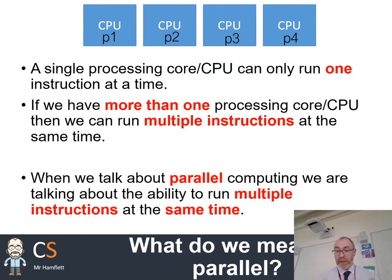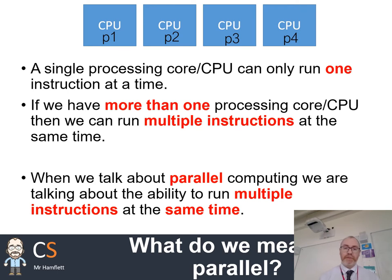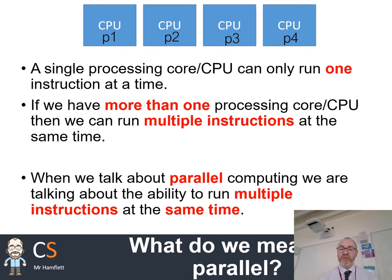You might already have an idea of what we mean by a parallel system, but let's be really clear about it. Imagine a system with multiple processors — this might be multiple cores inside a multi-core CPU, or physically separate CPUs. A server, for example, might have multiple processors each with multiple cores. If we have more than one processing core or unit, we can potentially run multiple structures at the same time, and that's where we get parallelism. That's what we mean by parallel computing.